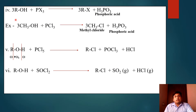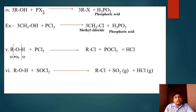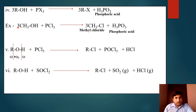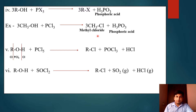The fourth method to prepare alkyl halide from alcohol: it is treated with phosphorus trihalide (PX₃). The corresponding alkyl halide is obtained along with phosphoric acid. Here I take three molecules of ROH alcohol. One example: methyl alcohol (methanol) is treated with phosphorus trichloride (PCl₃). The product obtained is methyl chloride along with phosphoric acid.